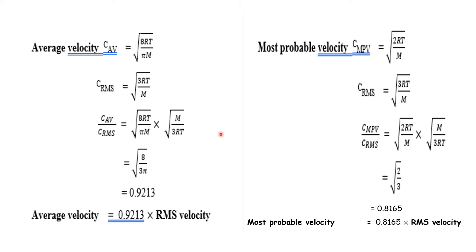First, let us discuss root mean square velocity once again. The root mean square velocity is related to temperature and kinetic energy. The kinetic energy formula is ½mv². That combination gives us the root mean square velocity.